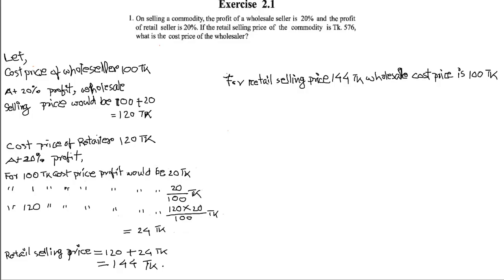Hi everyone, Assalamu Alaikum. Greetings from Talent Upscale, Class 8 English version, Maths Exercise 2.1. Problem number one: on selling a commodity, the profit of a wholesale seller is 20 percent and the profit of a retail seller is 20 percent. If the retail selling price of the commodity is Taka 576, what is the cost price of the wholesaler?